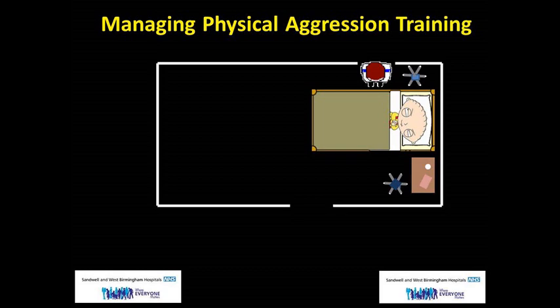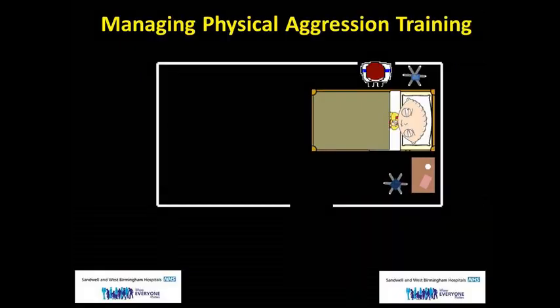Our patient, with a known history of aggression and sociopathic tendencies, only has a small distance to cover in order to get to the door and obstruct the staff member's ability to exit. We can start to think about and manage risk in these situations by looking at safe spaces that we can stand along the bedside.